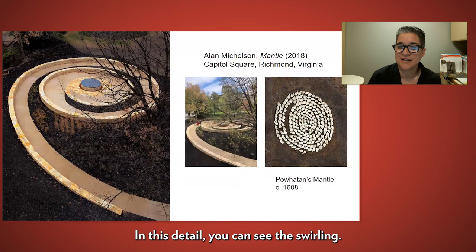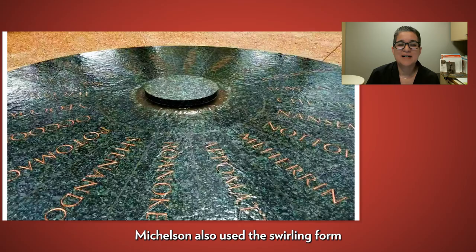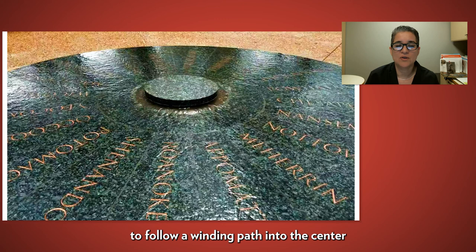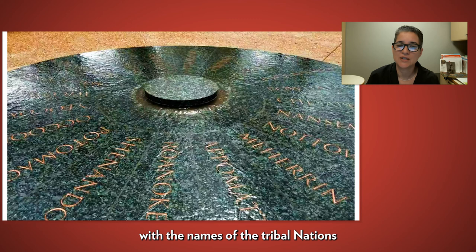In this detail, you can see the swirling. Michelson also used the swirling form of the shells themselves as inspiration for the monument, which invites visitors to follow a winding path into the center to view a water feature with the names of the tribal nations who made the lands we now know as Virginia their home.